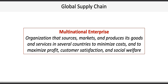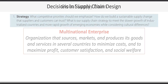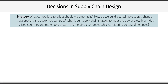Multinational organizations have to make numerous decisions when designing their global supply chains. We can identify 11 sets or categories of questions ranging from strategy to performance measurement that can guide the decision-making process. The first set of questions relates to strategy: what competitive priorities should we emphasize, and how do we build a sustainable supply chain that suppliers and customers can trust?